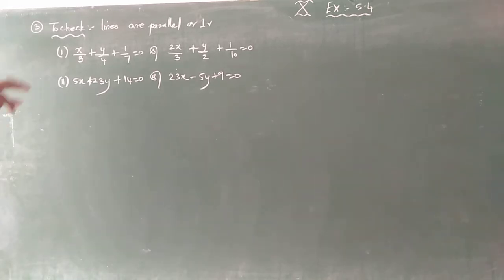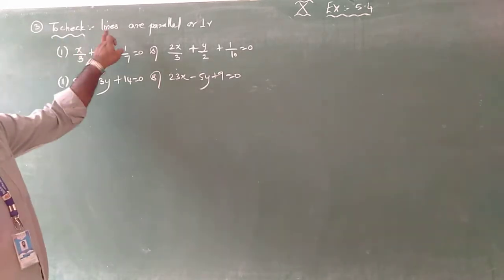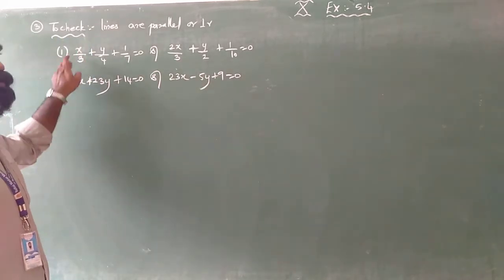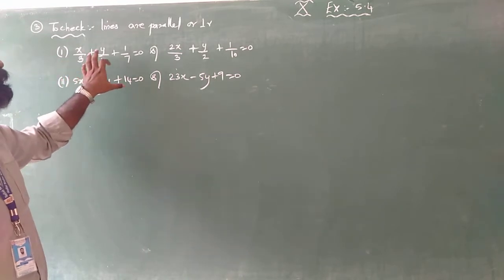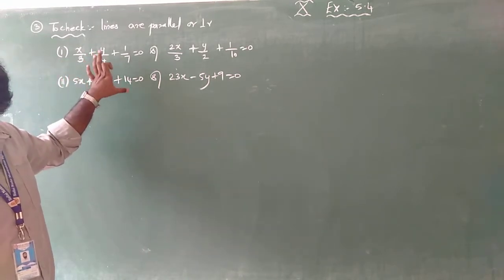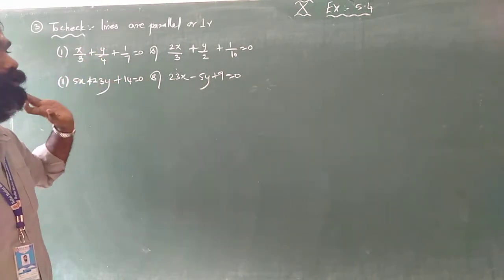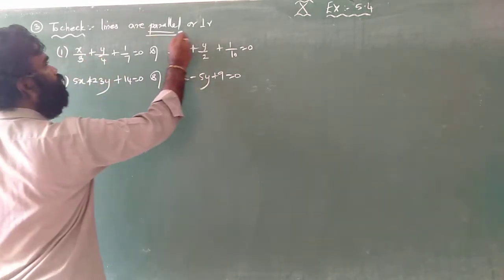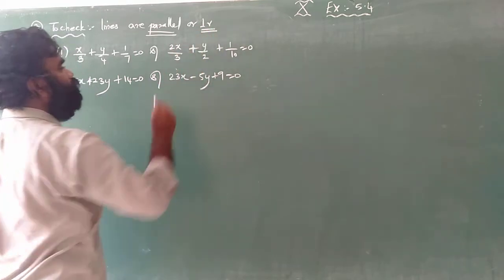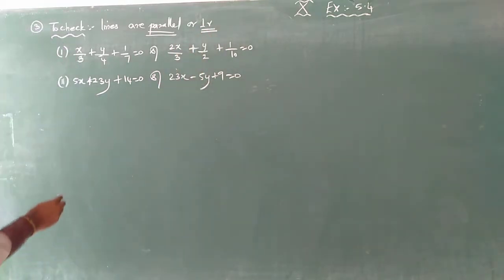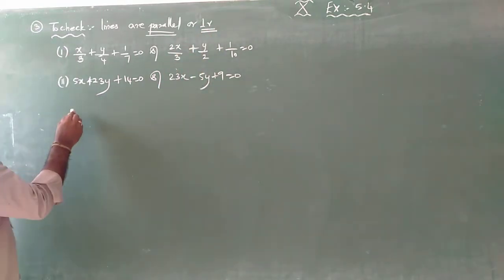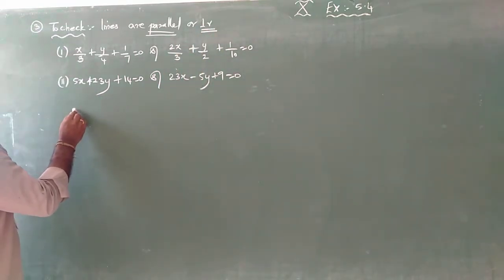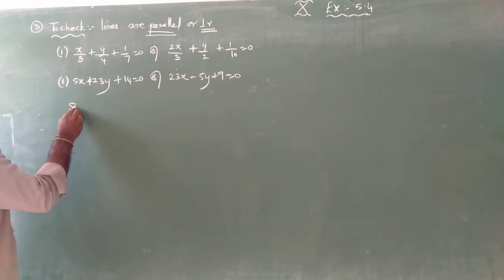This is the third sum. We need to check whether these two lines are parallel or perpendicular. Take the first subdivision to check if they are parallel.